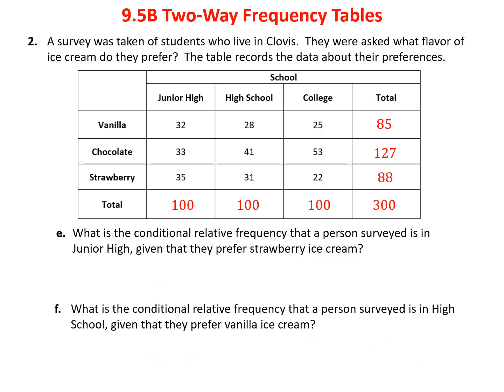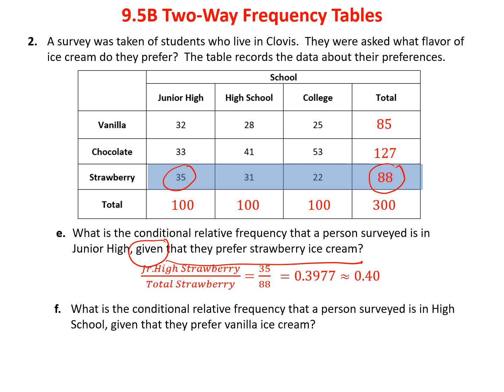So far we've been doing conditional relative frequencies based on the column total. But we could also do it from the row. Notice the given in part E: what's the conditional relative frequency that a person is in junior high, given that they prefer strawberry? Now we're asking — if I meet somebody who prefers strawberry, what are the chances they're in junior high? Strawberry is a row, with a total of 88. Of those, 35 were in junior high. So 35 divided by 88 is about 40% — if somebody likes strawberry, there's a 40% chance they're in junior high.